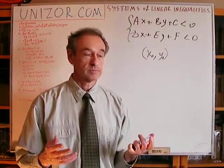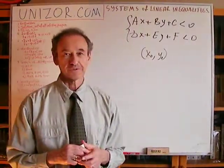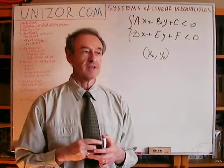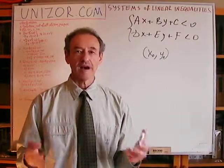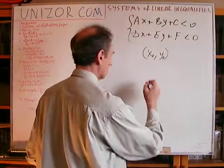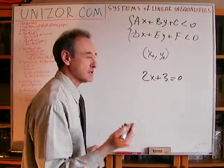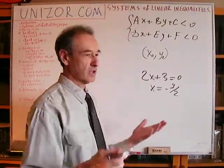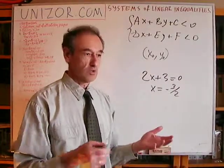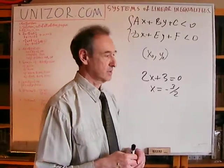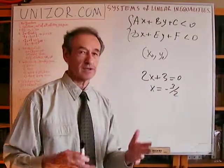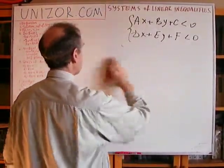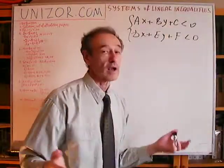Now, how can we find solutions? The problem with equations is simpler because solving equations gives you a finite number of solutions. For example, 2x plus 3 equals zero has one solution: x equals minus three-halves. Even a system of two linear equations with two arguments yields a finite number of solutions. In the case of inequalities, the number of solutions can actually be infinite.